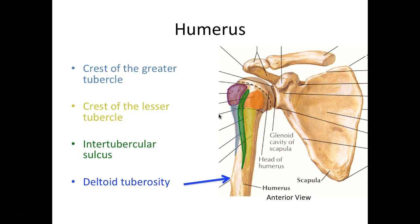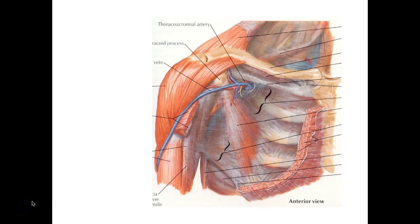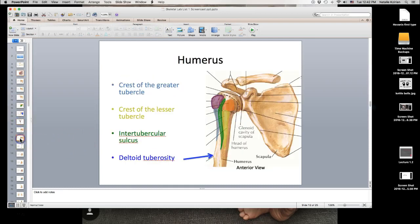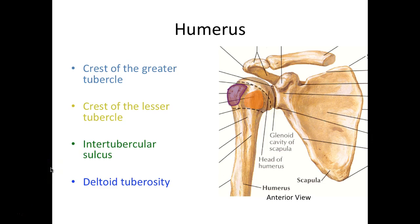The last part we can see here is the deltoid tuberosity. Tuberosity is similar to tubercle but a different type of bump — more of a perforated, rocky type of bump; I'll show you the difference in lab. It's called the deltoid tuberosity because the deltoid muscle inserts into that part of the humerus. The deltoid muscle moves down and inserts right at the deltoid tuberosity.